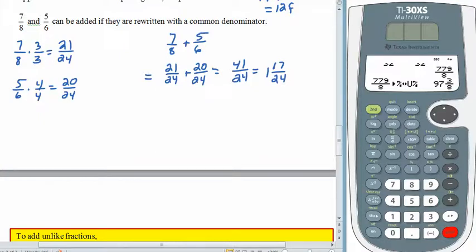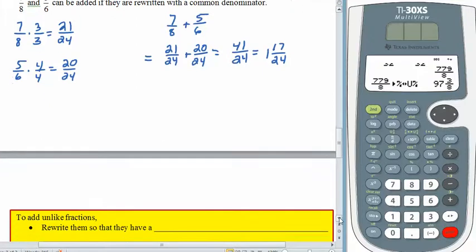So, what I'd ask you to do is pause the recording for just a second and try this addition problem here on your calculator. Make sure you've got the hang of it and make sure you can get the answer of 1 and 17 24ths. And then come back to the recording. Great. Let's flip the page and summarize everything that we've talked about so far.